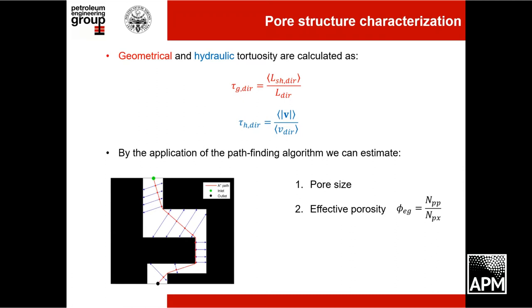Calculating the effective porosity this way is important because it is based only on a geometrical analysis, which is less time-consuming than a numerical simulation based on the Lattice Boltzmann method. Just for comparison, we also calculated the effective porosity based on hydrodynamic simulation by setting a threshold on the velocity field equal to one-tenth of the average velocity. We believe that below one-tenth of the average velocity, the fluid can be considered not movable.